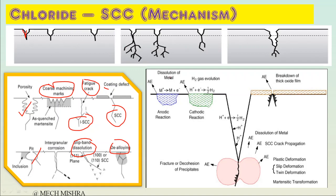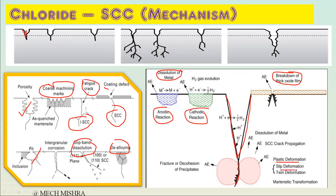First there is dissolution of the protective film - metal dissolution - where there may be two reactions: anodic and cathodic. Then there will be breaking of the thick oxide film, and then formation of a pit. Further, the crack propagates due to plastic deformation, slip deformation, or twinning deformation. This is the basic mechanism of CLSCC.